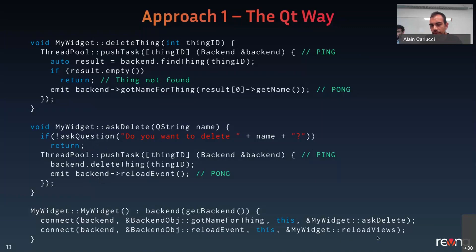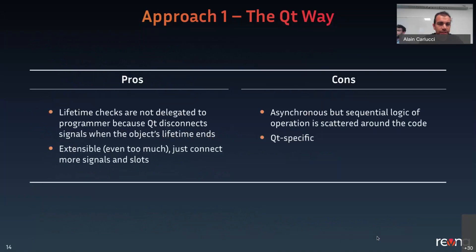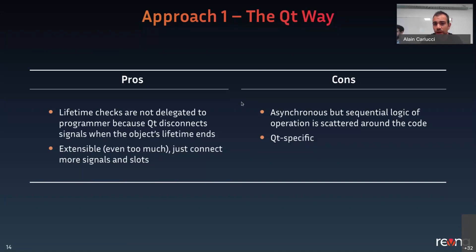The main advantage of the Qt signals/slots approach is that all the lifetime checks are not delegated to the programmer, because the signal automatically disconnects when an object is deleted. It's also extensible. However, the main disadvantage is that the code is scattered around — you have to look throughout the whole codebase to follow each step of the ping-pong. Also, this approach is Qt-specific, so if we had to do something without Qt, we would have to re-implement everything from scratch.